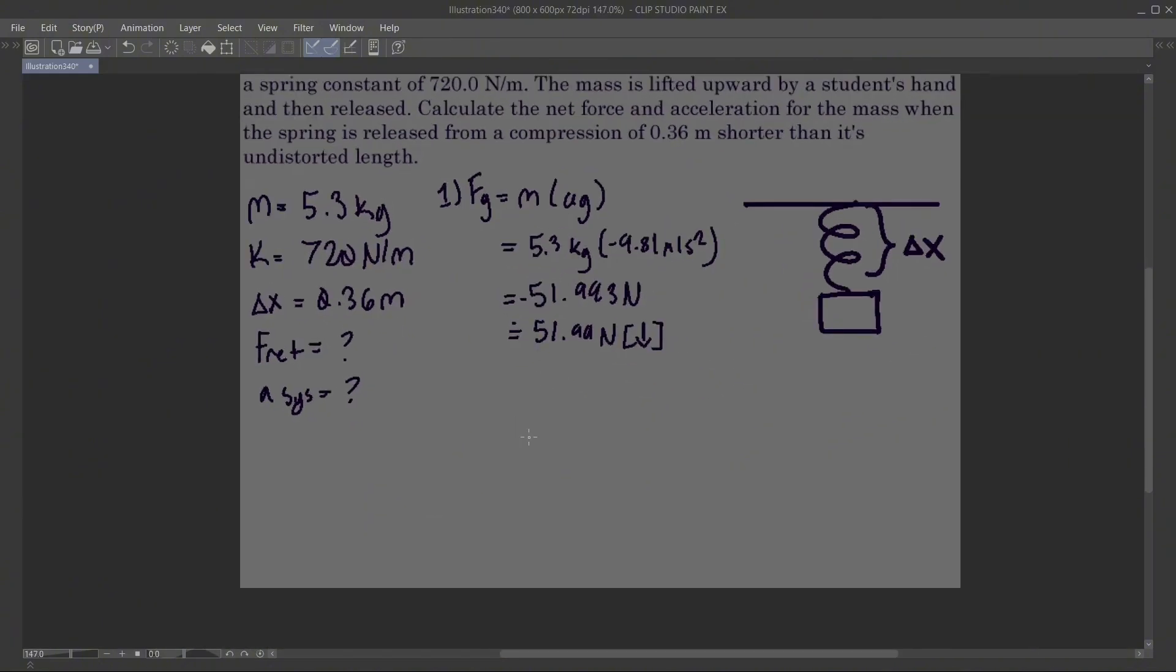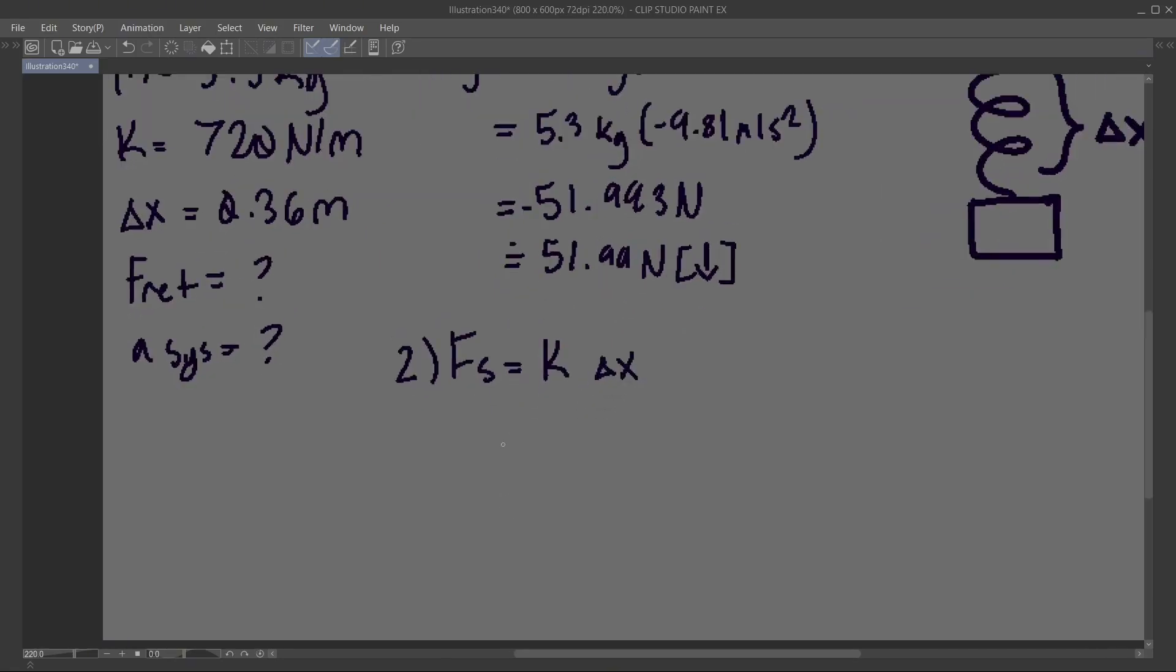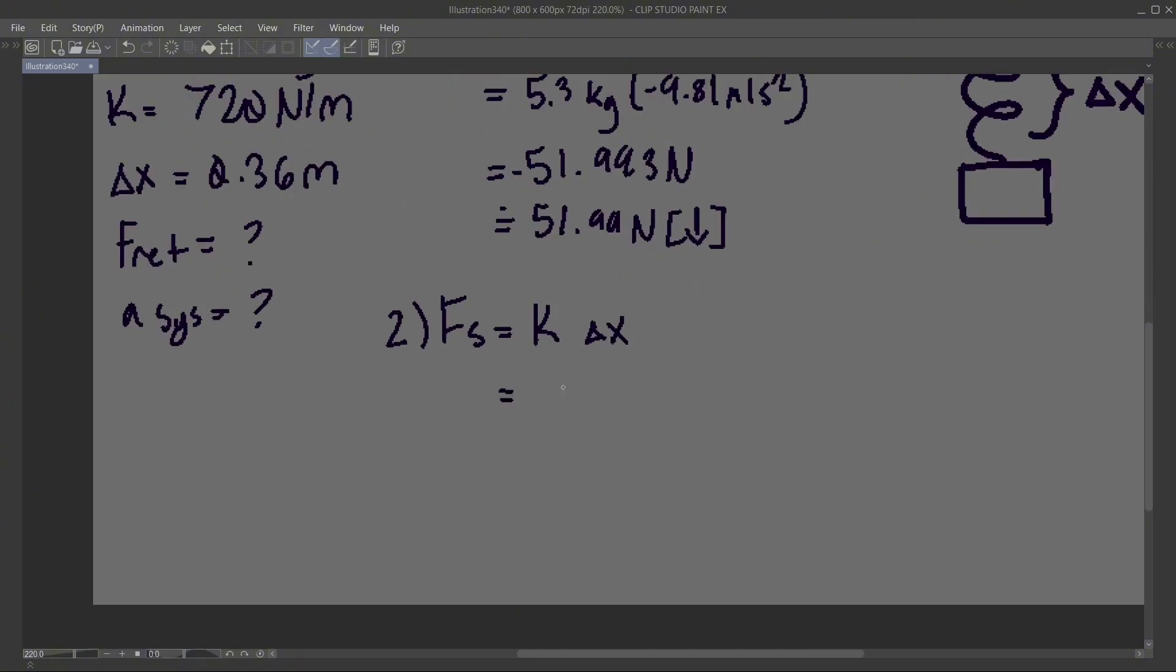That's force due to gravity. Next, we're going to calculate force of spring. Force of spring is equal to spring constant times delta x. Spring constant is 720 newtons per meter times delta x, which is going to be negative 0.36.